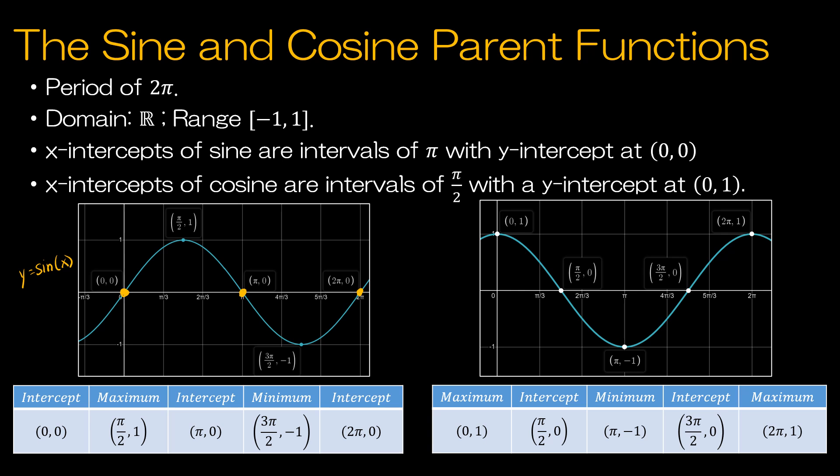And the cosine function, the intercepts are at intervals of π over 2. So 1π over 2, 3π over 2. So this is π over 2 plus πn, where n is some integer, which means I'm adding π to this. So 3π over 2, the next one would be 5π over 2, and so forth. So those are the intervals, the intercepts.